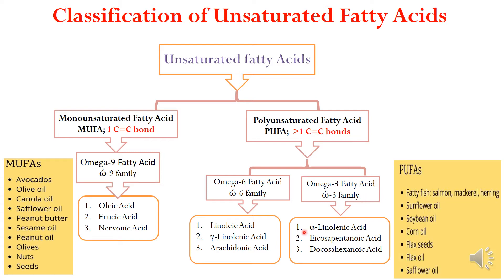The food sources of polyunsaturated fatty acids include marine foods generally among the non-vegetarian food. These include fishes like salmon, mackerel, and herring. They also include vegetable oils such as sunflower oil, soya bean oil, corn oil, flaxseed oil, flaxseeds, and safflower oil.